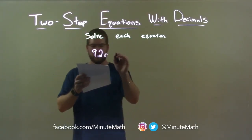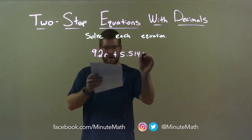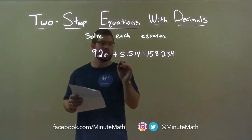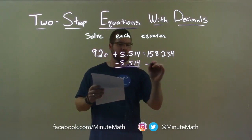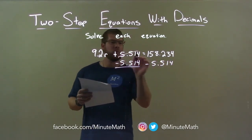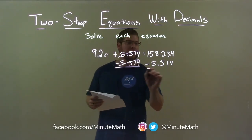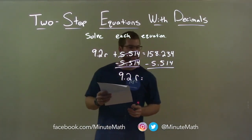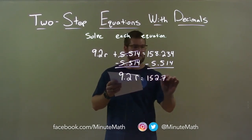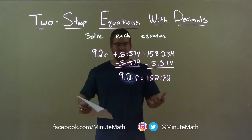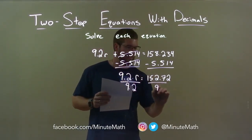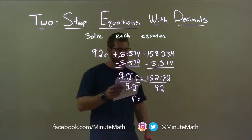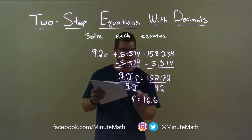9.2r plus 5.514 equals 158.234. I want to solve for r. First step: subtract 5.514 from both sides. This eliminates the 5.514 on the left, giving me 9.2r by itself. On the right, 158.234 minus 5.514 is 152.72. Now we're being multiplied by 9.2, so opposite multiplication is division. Divide both sides by 9.2. The 9.2s cancel, giving me r by itself. 152.72 divided by 9.2 is 16.6, and there is our final answer.